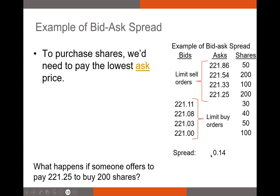The spread will change depending on the security and the time period. For some stocks like Berkshire Hathaway's Class A shares, the spread can actually be in the thousands of dollars because there's a massive difference between the lowest open asking price and the highest bid — there's just not a lot of volume for those shares. If we looked at Apple's current spread when those shares are trading, that spread is probably going to be maybe a cent or a few cents — it's very liquid, so the spread will be very low.